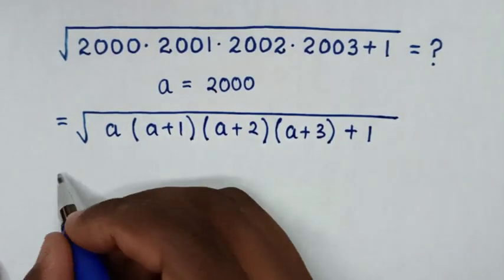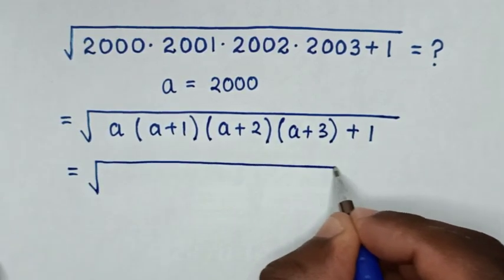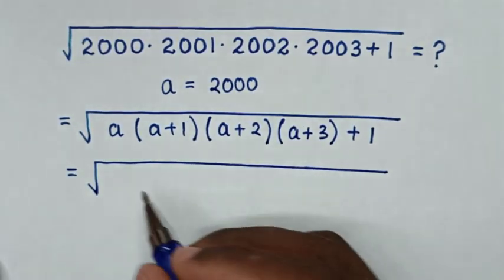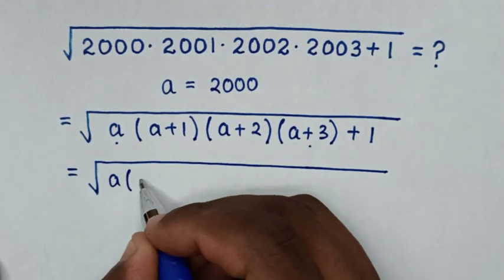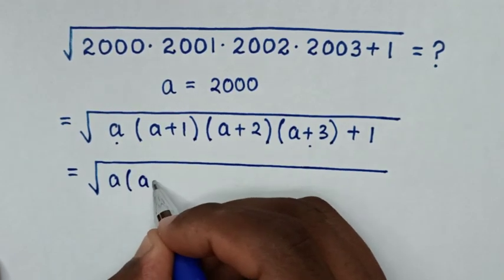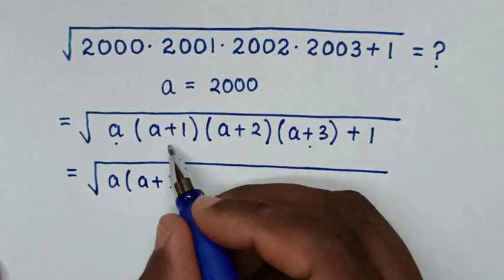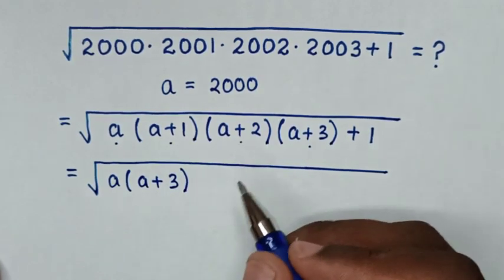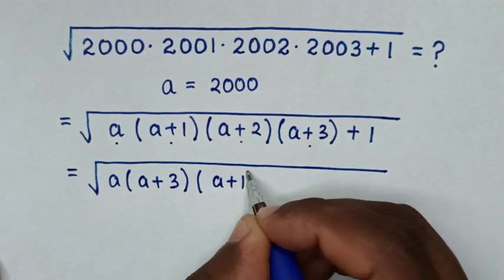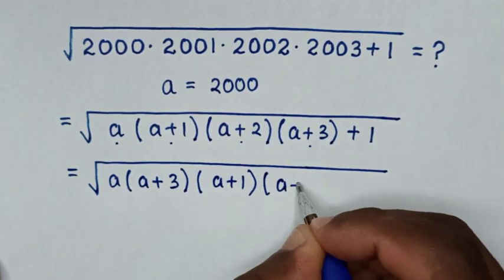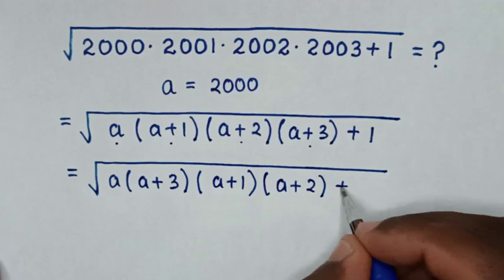In the next step, it will be equal to square root of (a)(a plus 3) times (a plus 1)(a plus 2), then plus 1. So we group the outer pair and the inner pair together.